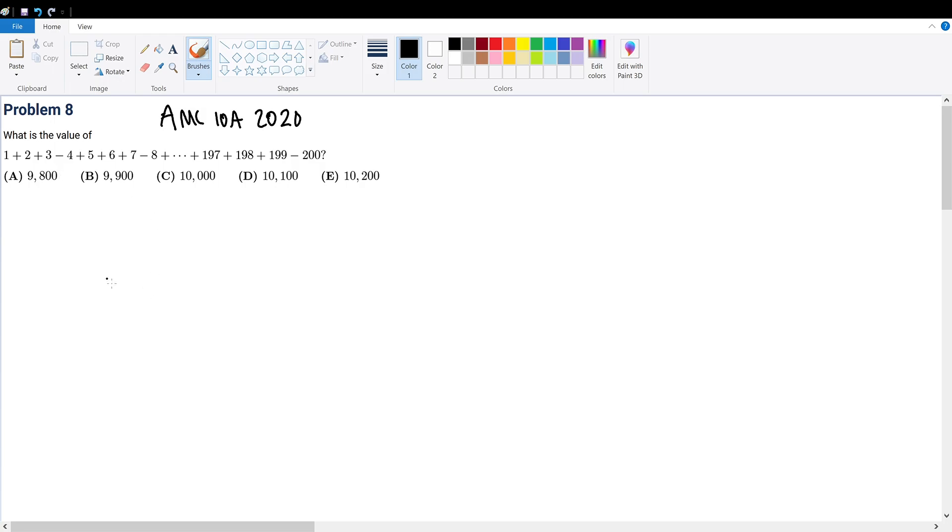Immediately when I see this, I see that it is awfully similar to 1 plus 2 plus 3 plus 4 plus 5 all the way to 200. There are no subtractions. But if we do this, we are adding the sequence 4 plus 8 plus 12 all the way to 200, the multiples of 4, twice.